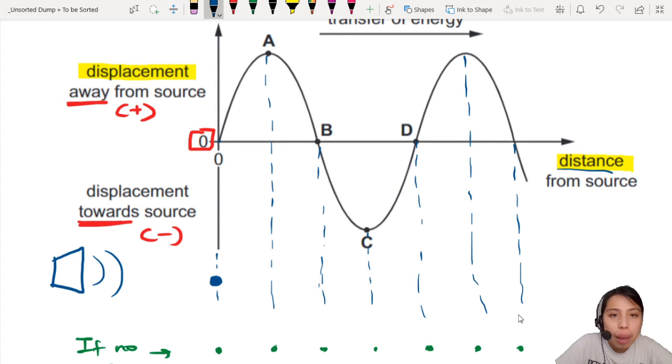Now let's look at A. Particle A is away from the source. So it will be something like this, a little bit away, to the right, to the right of where it's originally supposed to be.